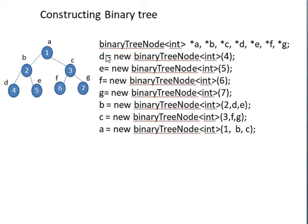Now let's discuss: once we create a binary tree using this code, how do you print all the elements - whether numbers or an expression - using various traversal methods? The next topic is binary tree traversal methods.